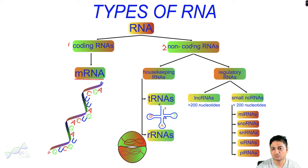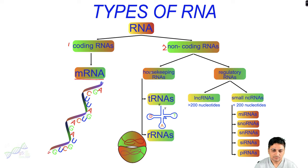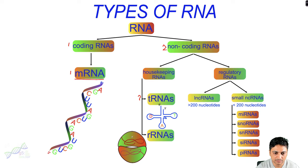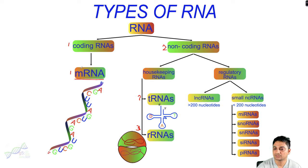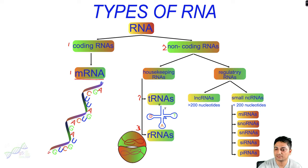In the non-coding RNA category there are two different kinds: housekeeping RNA and regulatory RNA. Housekeeping RNAs are essential for the process of translation — tRNA and rRNA are both responsible for protein synthesis. Beside these, there are some other RNAs responsible for regulation of gene expression and other processes in the cell. Those regulatory RNAs are divided into two types: long non-coding RNAs and small non-coding RNAs.